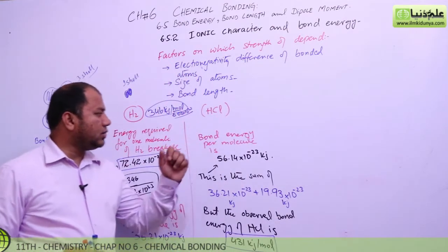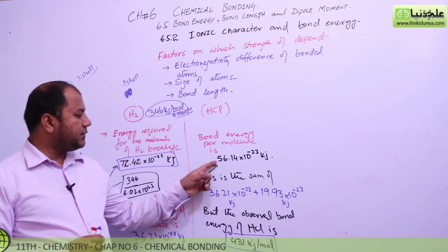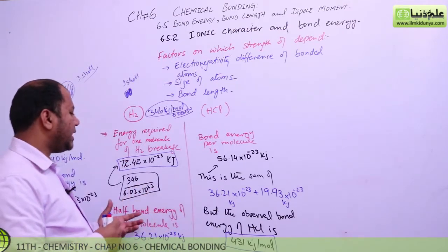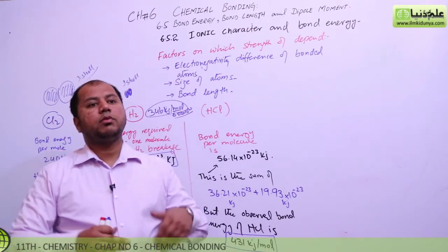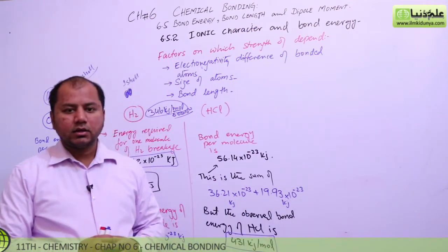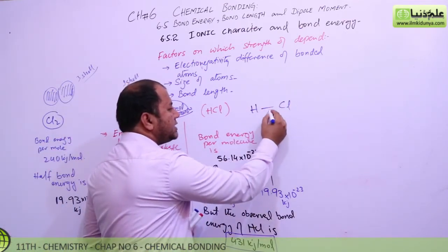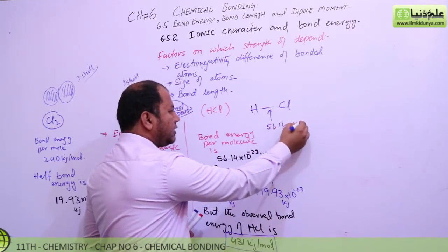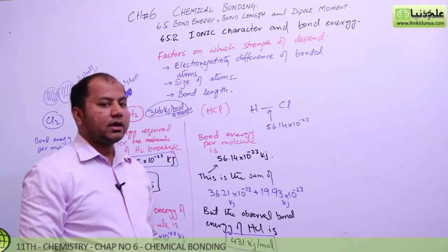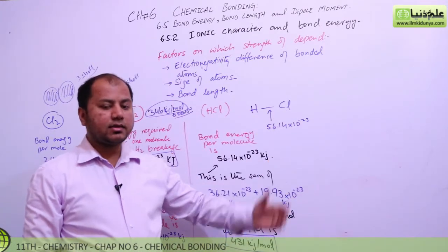If we look at the HCl molecule, its total bond energy should theoretically be 56.14 × 10⁻²³ kilojoules. When a hydrogen atom forms a bond it releases a certain energy, and when a chlorine atom forms a bond it releases a certain energy. So the bond energy of HCl should be predictable. But experimentally, it is seen that HCl holds much more bond energy than 56.14 × 10⁻²³ kJ.